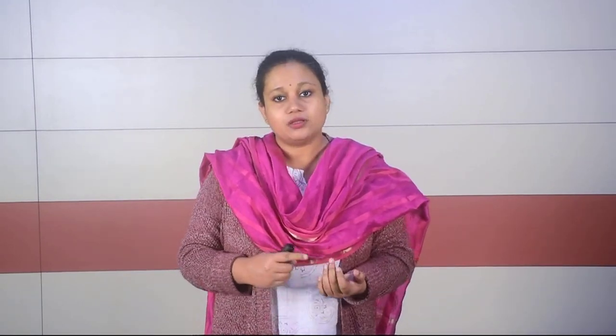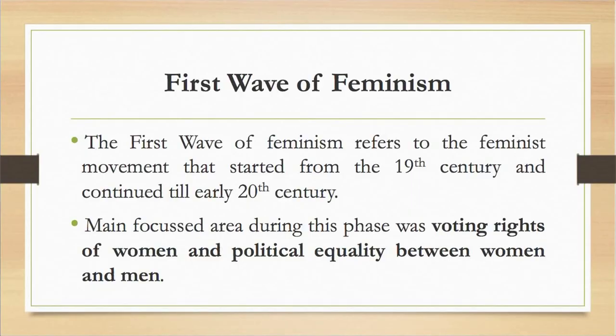Now we shall discuss the evolution of feminism. While discussing the evolution of feminism as a movement, we can refer to three waves: the first wave, the second wave, and the third wave of feminism. The first wave of feminism refers to the feminist movement that started during the 19th century and continued till the early 20th century.